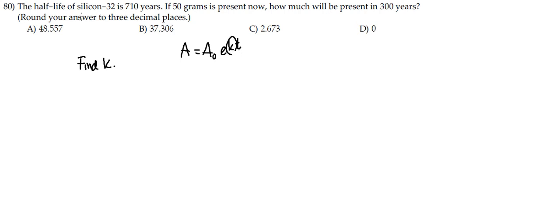So the first sentence here gives us the information that we need to find that. So the half-life, meaning that when half the original amount is there, the time will be 700 years. So in our original formula here, we're saying when t is 710, the new amount will be half the original amount. That's the definition of half-life.